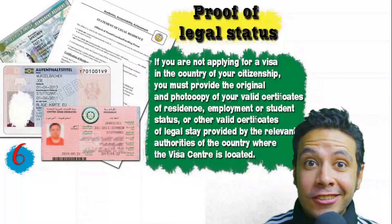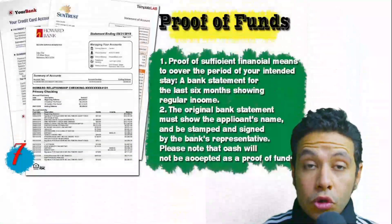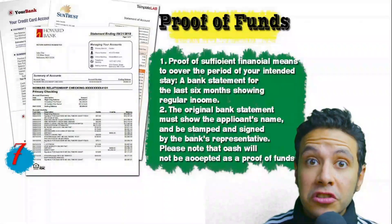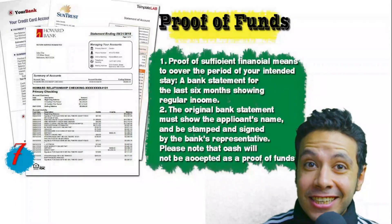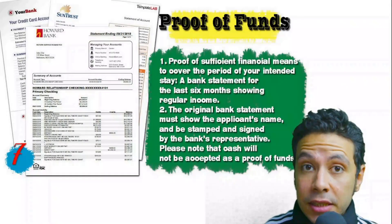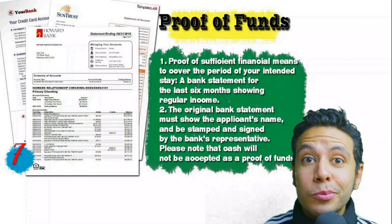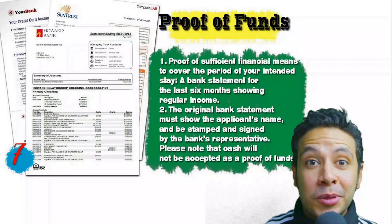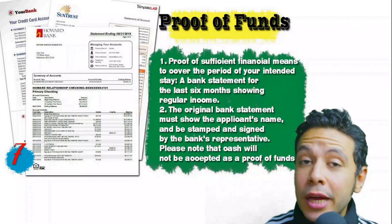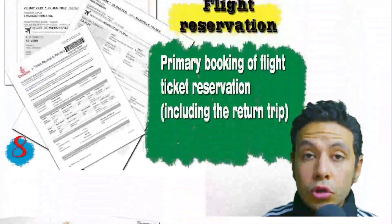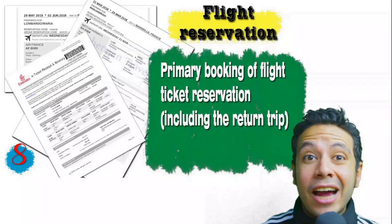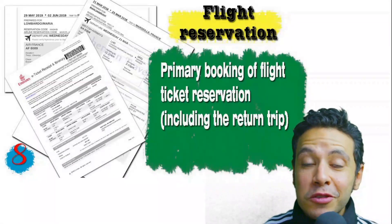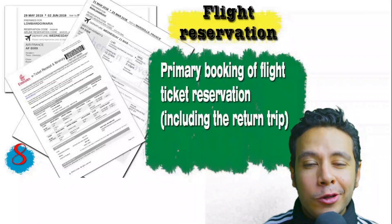In some cases, if you are applying from a country different from your own, you will need to provide a proof of legal status — a certificate of legal residence in that country, and sometimes a valid residence visa can also be accepted. You will also need to provide a proof of sufficient funds, which is a bank statement showing your balance for at least six months. The original bank statement must show your name and be signed and stamped by the bank. Remember that cash will not be accepted as proof of funds. You should also provide a flight reservation — an initial booking is usually acceptable, though in some cases a confirmed booking is required — and it must include a return ticket.